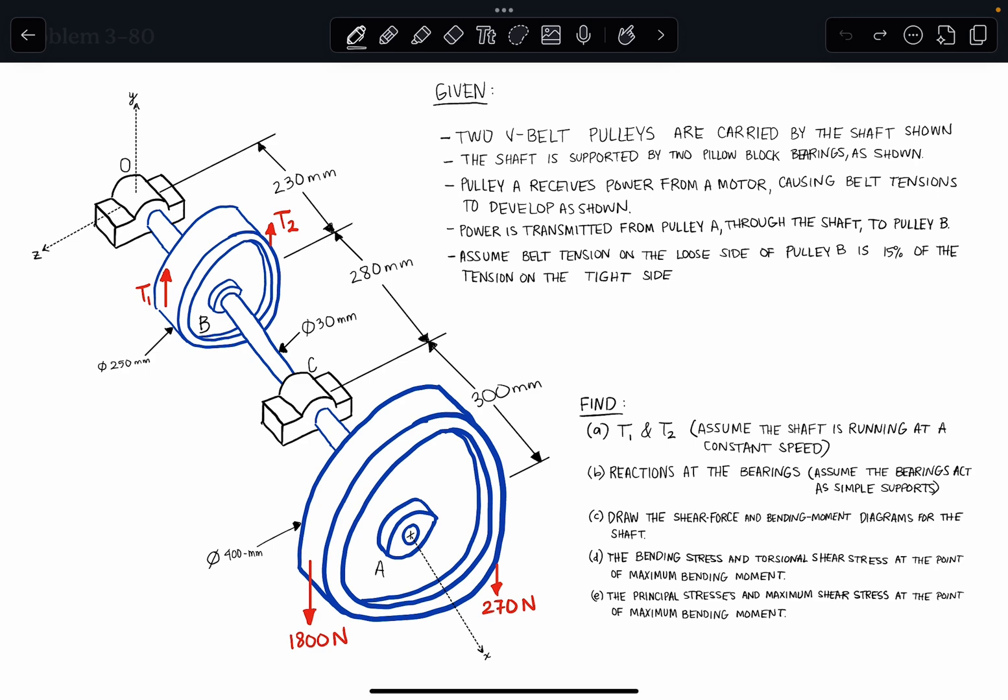All right, so we have that, and we have a shaft that is supported by two pillow block bearings that are shown. That's at O and C here. The pillow block bearings just provide support in the vertical direction, so along the y-axis here, y-axis and z-axis. So they prevent translation, but they allow for rotation.